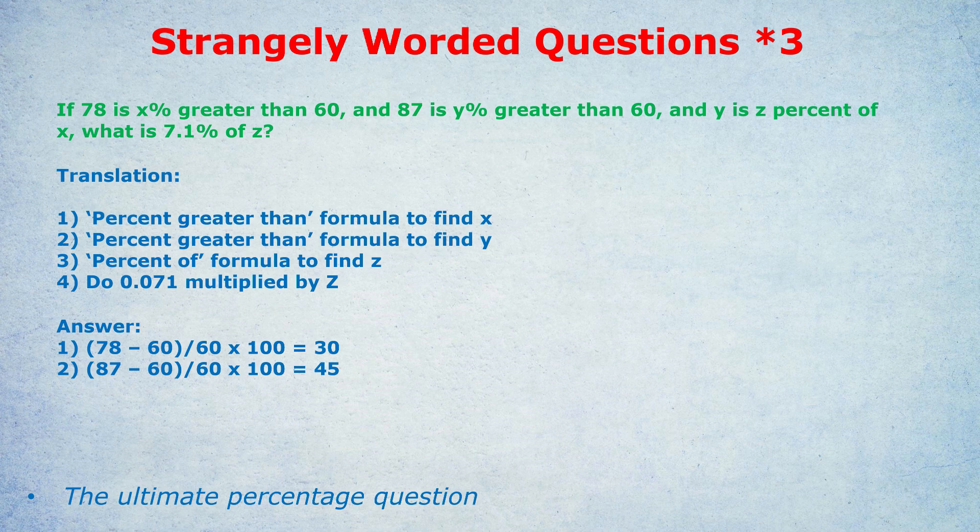The formula is new minus original, so 78 minus 60 divided by original which is 60 times 100. I've done that on the calculator and I get 30. Same thing for the second part. 87 is what percent greater than 60? Put it into the formula and we get 45.